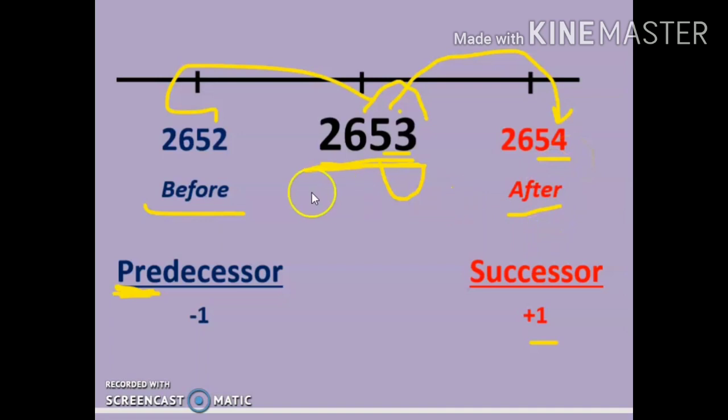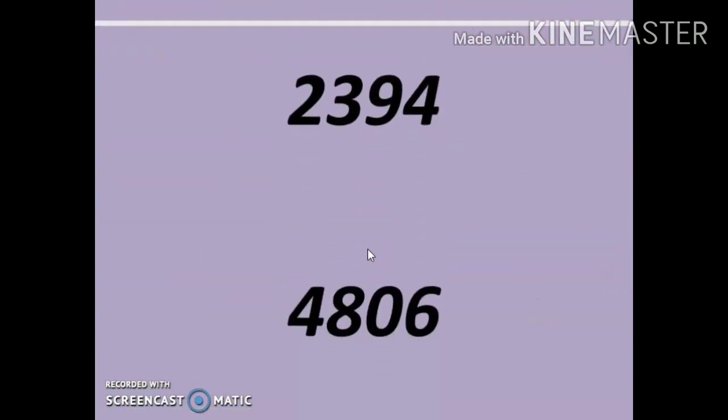I have written a number here, 2394. If I have to write the successor of this number, it will be 2395. Successor refers to the number after. And if we have to write the number before, that is predecessor, the answer will be 2393.